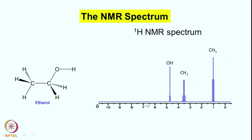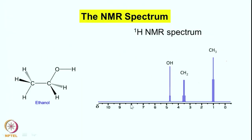Now the question is how do we measure this — what are the frequencies present in your NMR spectrum? In the early days, the method was called the slow passage experiment. You have a particular magnetic field and sweep the frequency. When you reach the resonance condition here you get the signal, then you reach the resonance condition here you get the signal, and then you reach the resonance condition here and get the signal there.